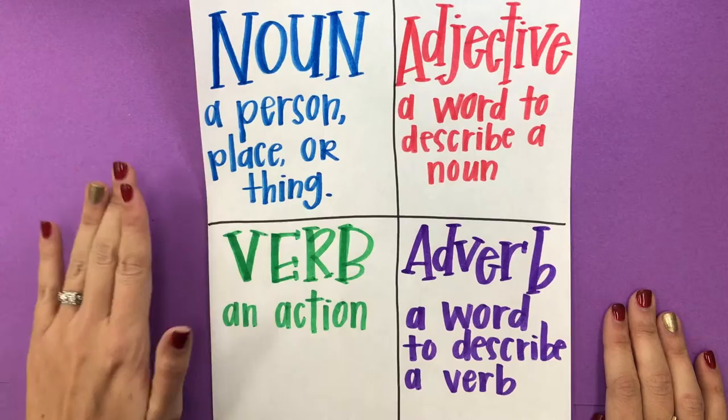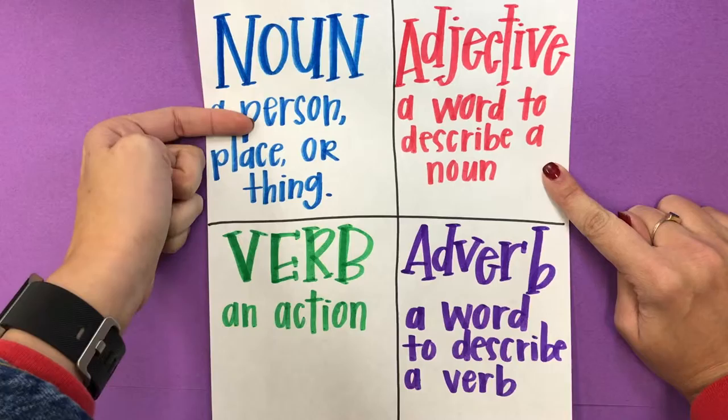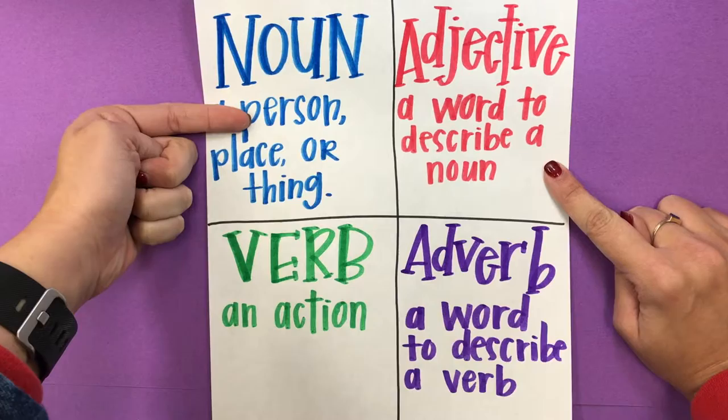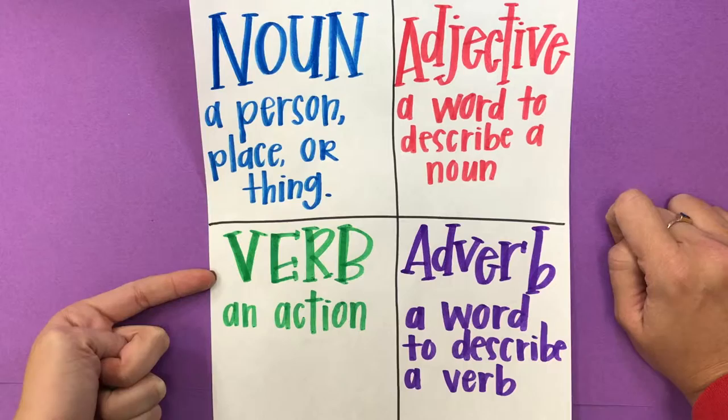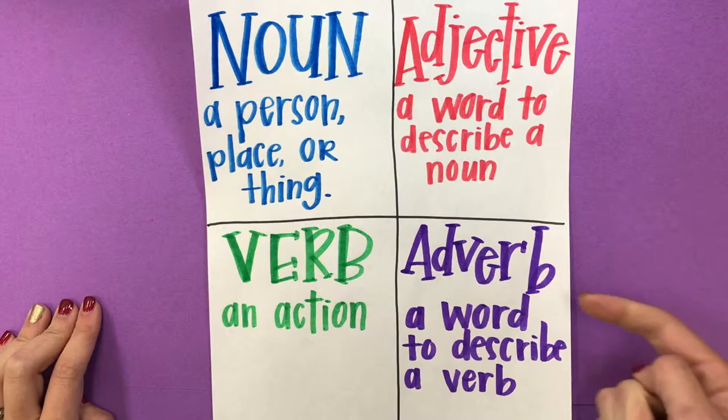We're going to be talking about four parts of a sentence while we are writing our book. The noun, which is a person, place, or thing. The adjective, which is a word to describe the noun, like pretty, or huge, or tiny, or soft. A verb is an action, like run, or jump, or hop — basically any action.